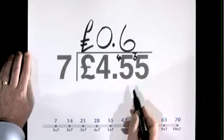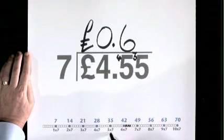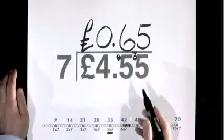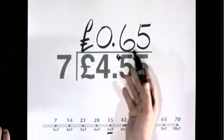7 goes into 35, 5, 5 times. 65, 65p or no £65, 65.